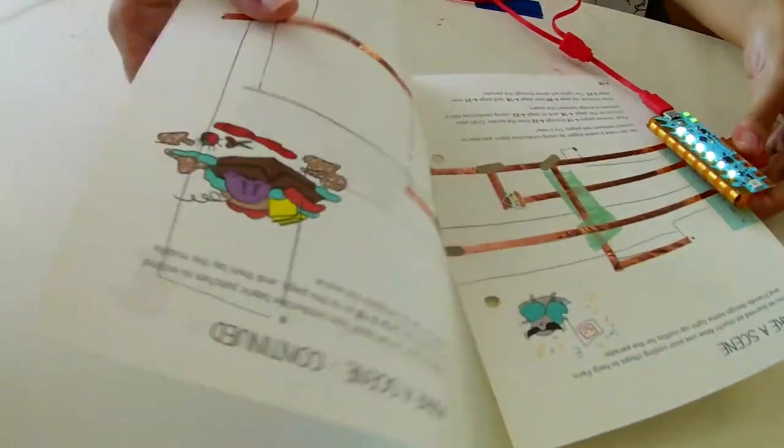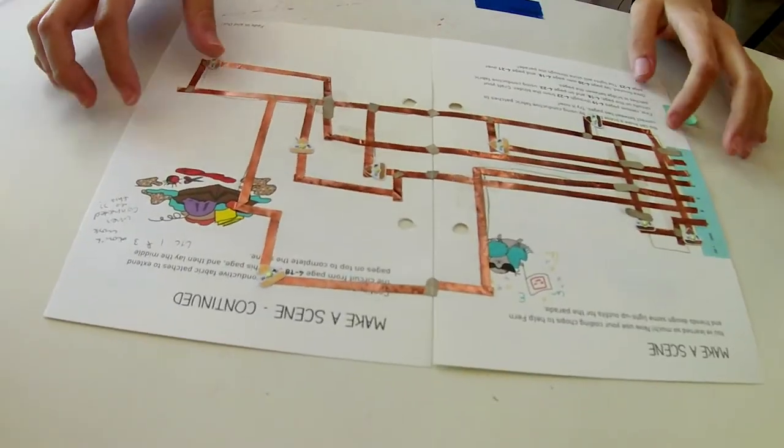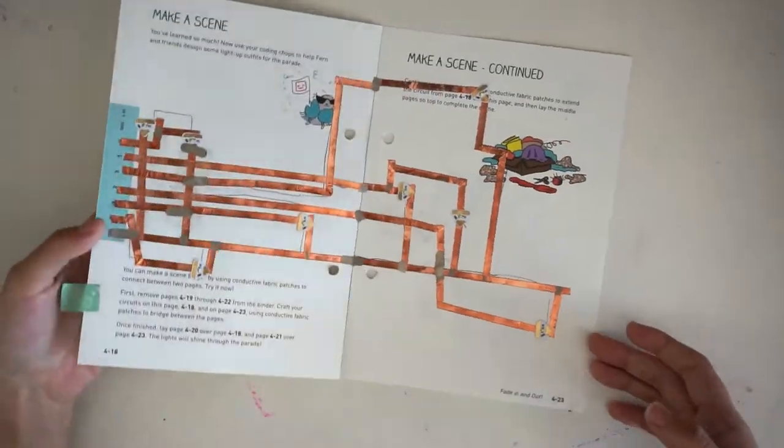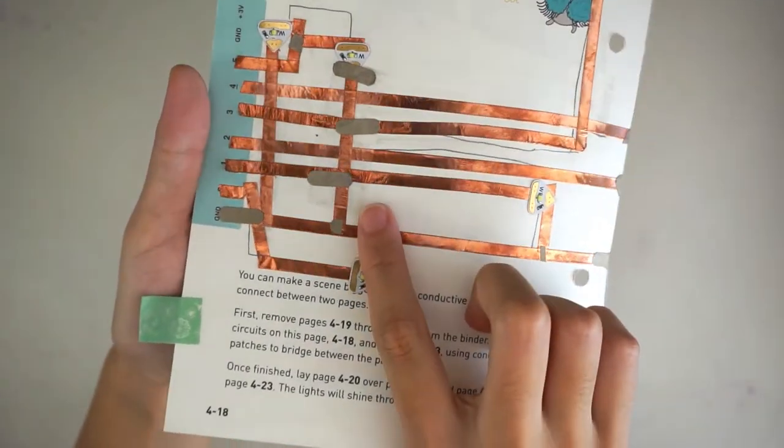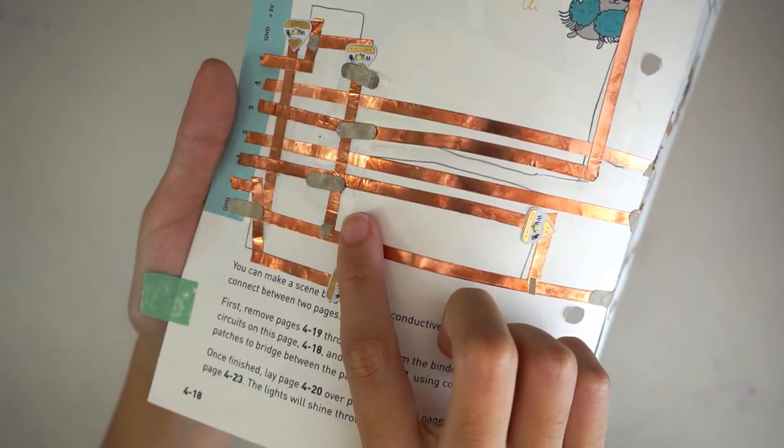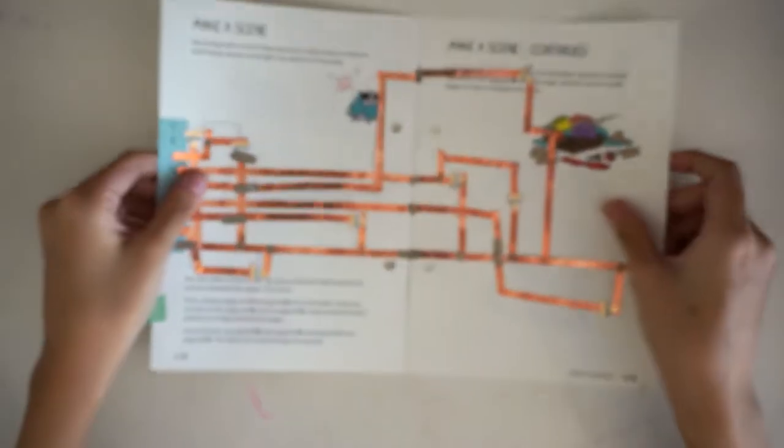We continue adding LEDs until we end up with a circuit that looks something like this. We built this circuit using clear tape to insulate the crossover points. It's harder to check your work using clear tape, so it's better if you can use masking tape or washi tape for your crossover points.